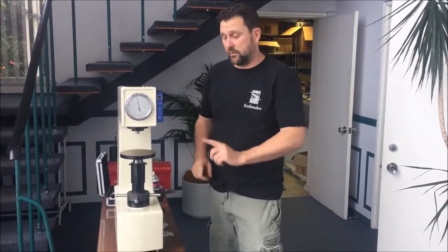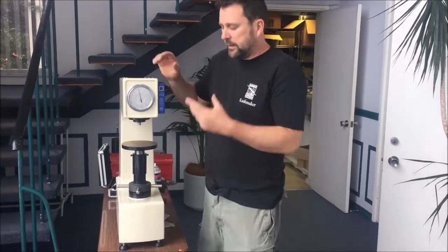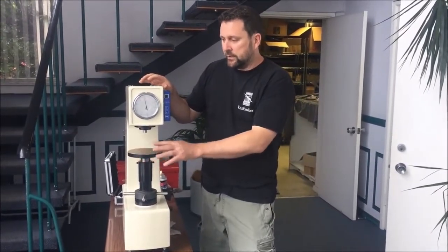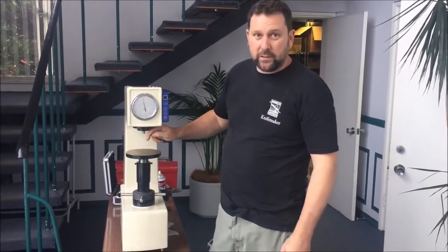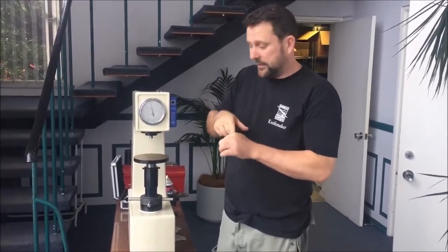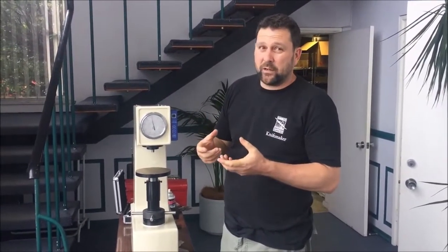We've mounted the hardness tester on a sturdy base, because it will work much better on a sturdy base. Let's talk about principles of operation. When we hit the start button on this, it's going to apply a pressure on an indenter. It's going to push a piece of diamond basically into a piece of steel, and it's going to measure how far it goes into the steel. By measuring how far it goes into the steel, we can determine how hard the steel is. That's the basic principle of operation.